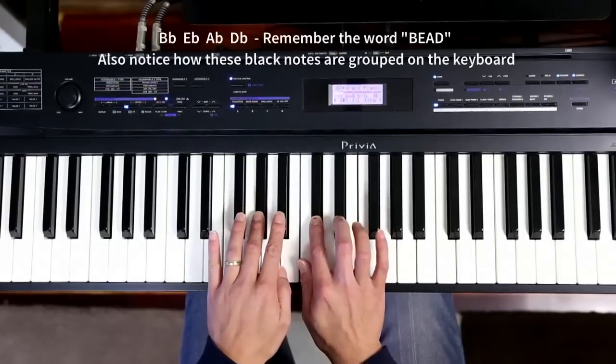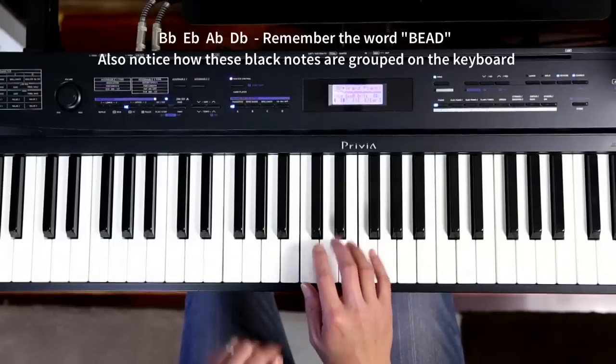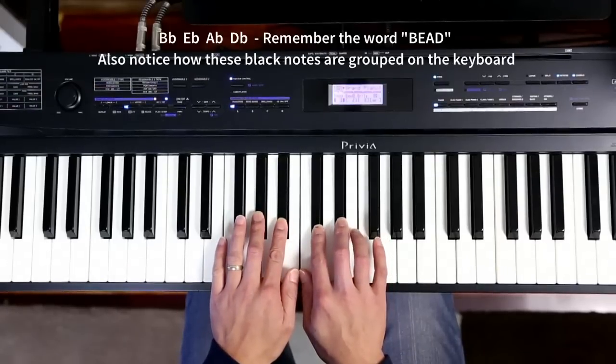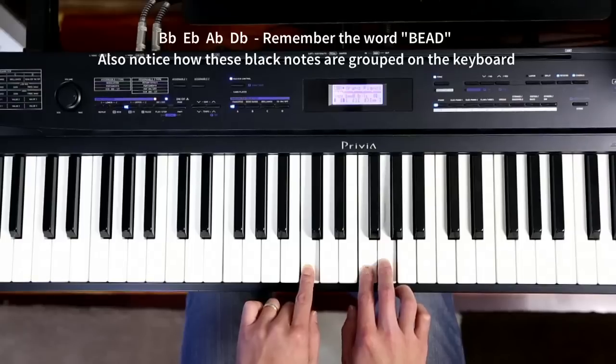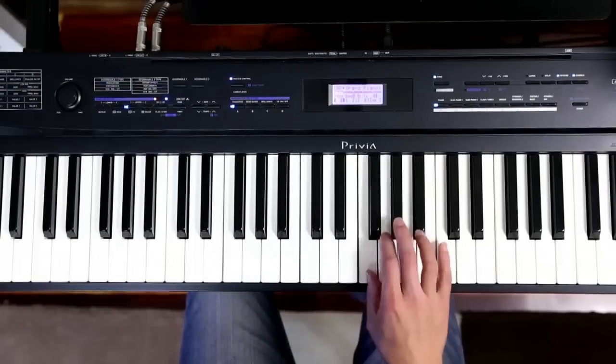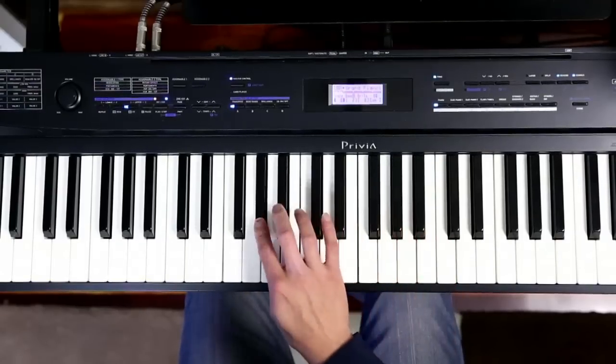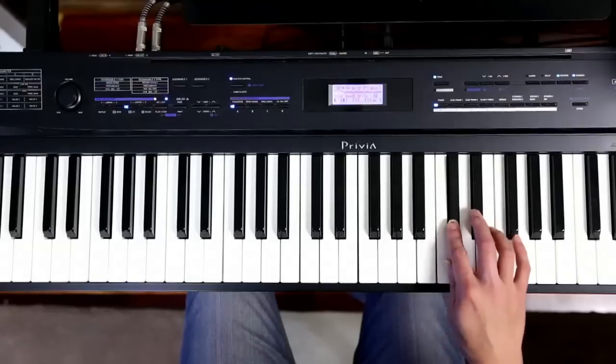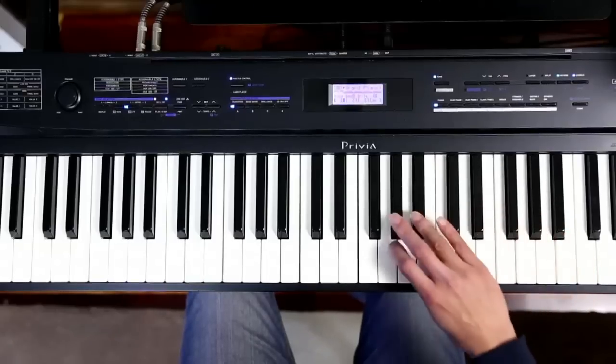B, E, A, D—that spells the word BEAD, makes it nice and easy to remember. We've got those black notes, and we've got these white notes: C, F, and G. So if you're just starting off, I would recommend just going up and down the scale a couple of times, try to keep it consistent and smooth.